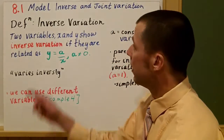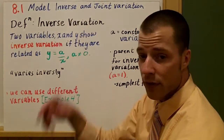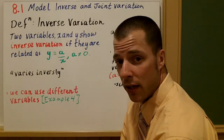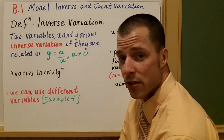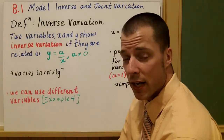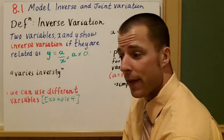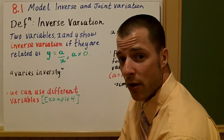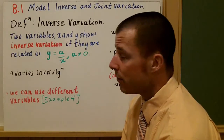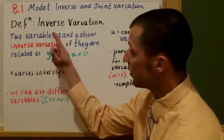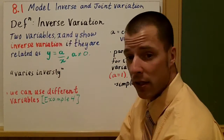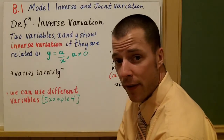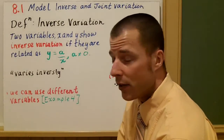This is section 8.1, Modeling Inverse and Joint Variation. In this chapter, we're going to be studying rational functions, how to graph them, how to add and subtract them, and multiply and divide them. But the first thing we're going to talk about is inverse variation, which is really the simplest form of a rational function.